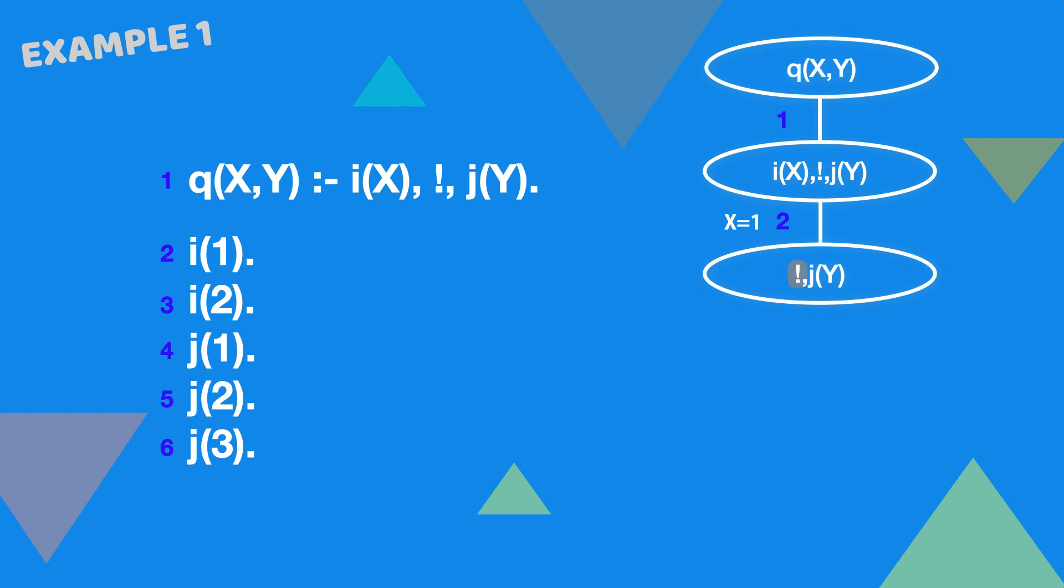The first of the remaining goals is the cut. The cut is built in and it succeeds, with the side effect of removing potential branches above it in the search space.